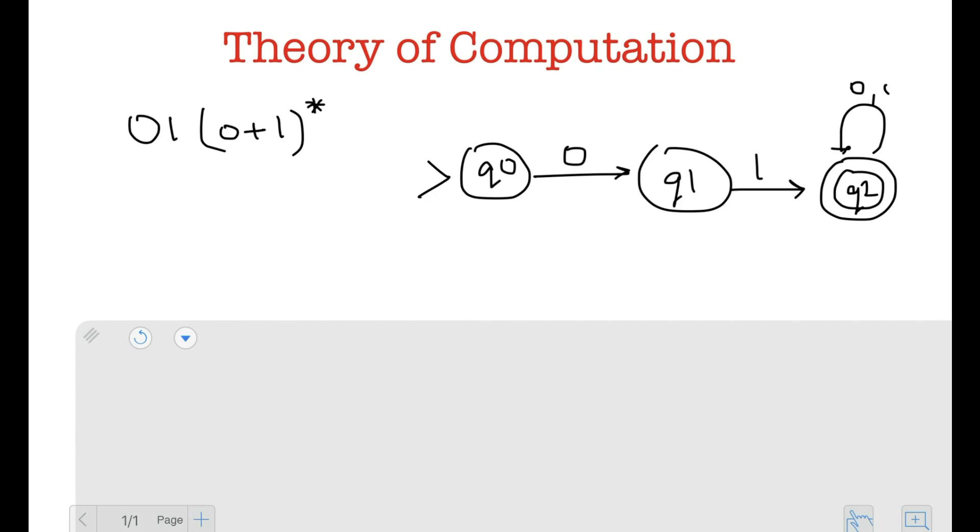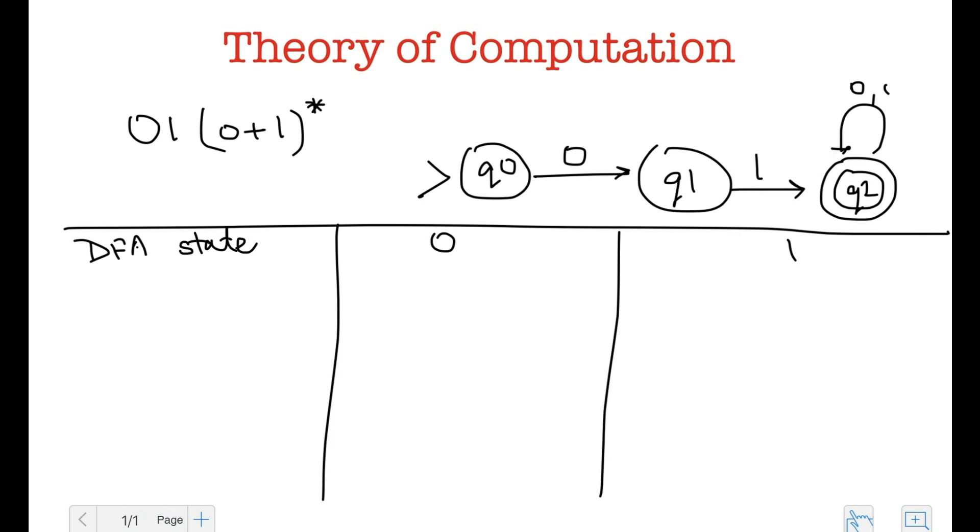And this is my start state right here q0. So let's try drawing the transition table for converting this to a DFA. So the first thing I have is q0 itself and q0 on zero goes to q1. But on one q0 doesn't go anywhere. So I don't know what to put here. Let's just keep this blank for now.